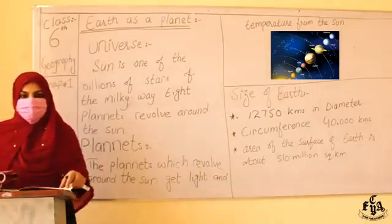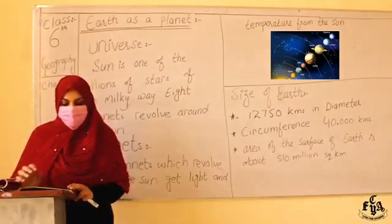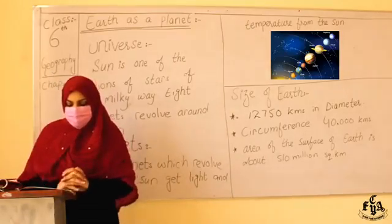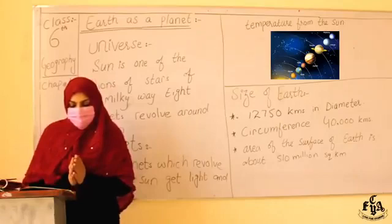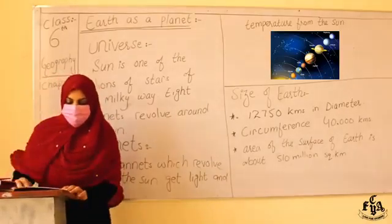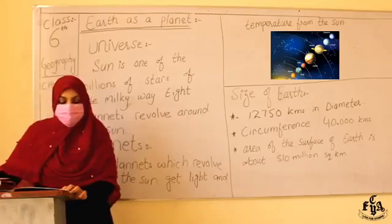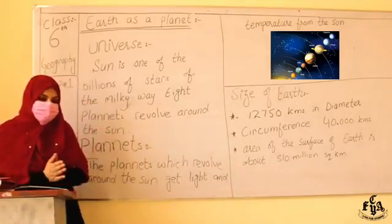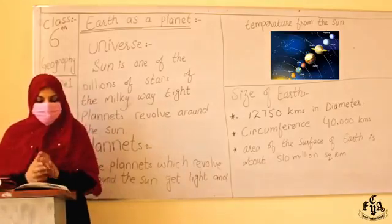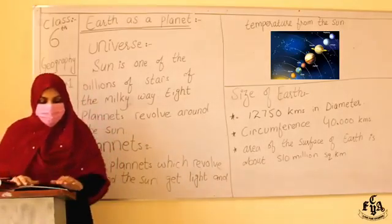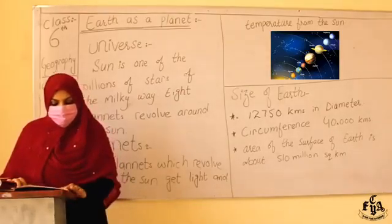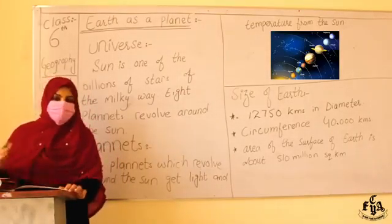Regarding the formation of day and night: the Earth's axis is tilted at an angle of 66.5 degrees. Due to this tilt, the length of day and night changes. The days are longer in the portion which is tilted toward the Sun, and the days are shorter in the portion which is tilted away from the Sun.